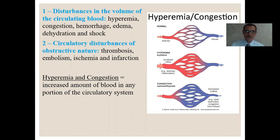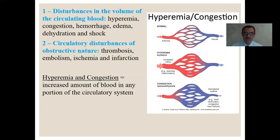The hemocirculatory disturbances are divided into two big groups. First, the disturbances in the volume of the circulating blood, which include hyperemia, congestion, hemorrhage, edema, dehydration, and so on. The second group has circulatory disturbances of obstructive nature: thrombosis, embolism, ischemia, and infarction.